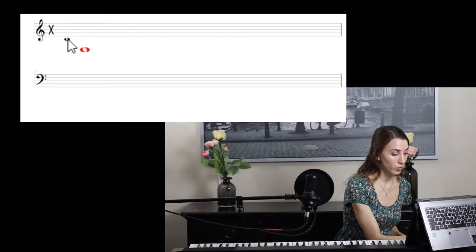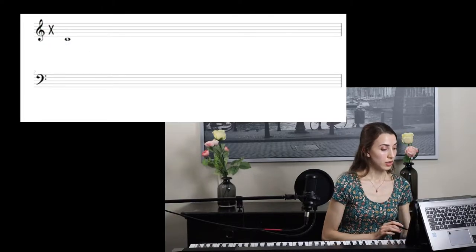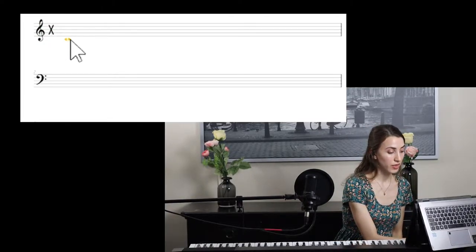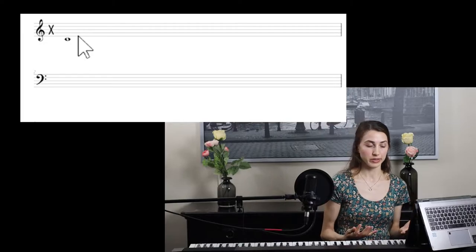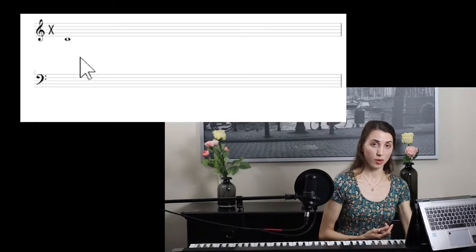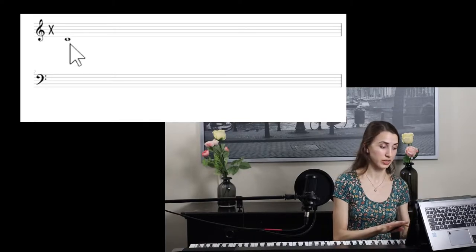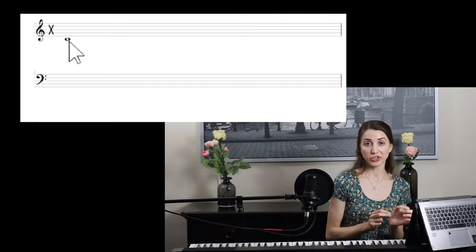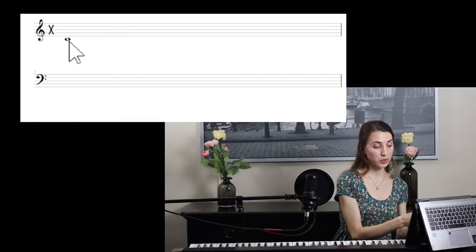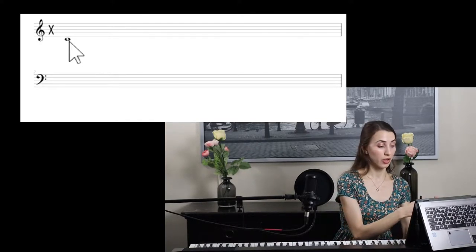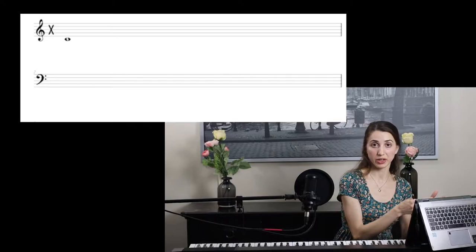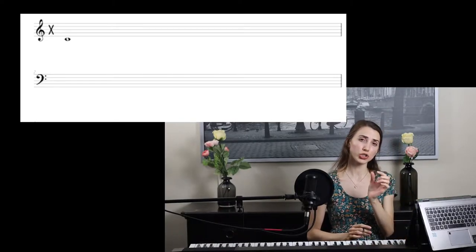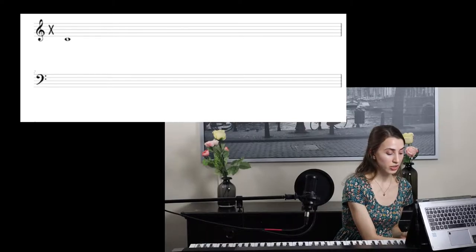Now I'm going to start with middle C. As you can see, middle C stands on a short line. These five lines are the main lines that each staff has — the treble clef has five lines and these are the main lines. Middle C has its own extra line for notes that don't belong on the five main lines. We give them those extra short lines, just like middle C has a short line.